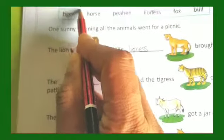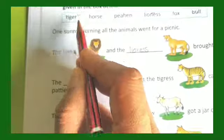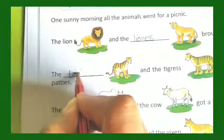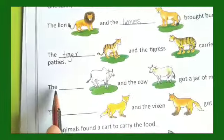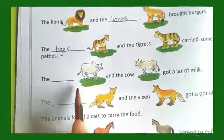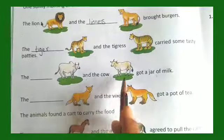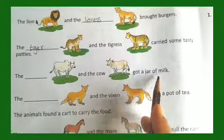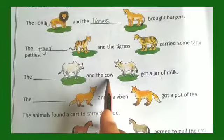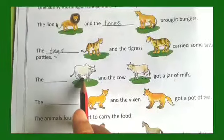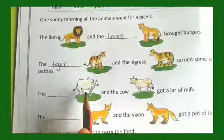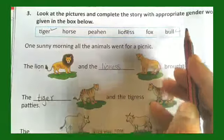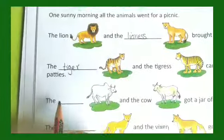We find the word tiger here, so put a tick mark and write tiger. The dash and the cow got a jar of milk, so the opposite gender of cow is bull. We write down the word bull.